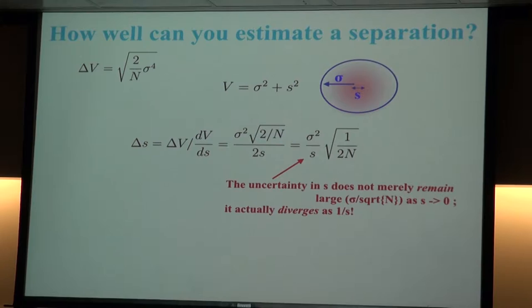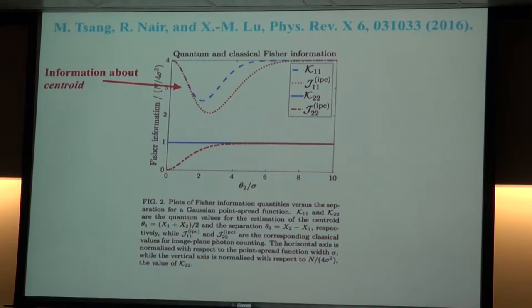V is the variance — the mean squared separation from the center. The square root of V is the width of the distribution. The width is the quadrature sum of the individual point source width and the separation between those two points. So as S goes to zero, this thing actually diverges. This was pointed out in a series of papers by Mancat Tsang and his collaborators.